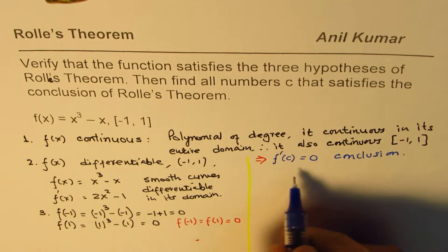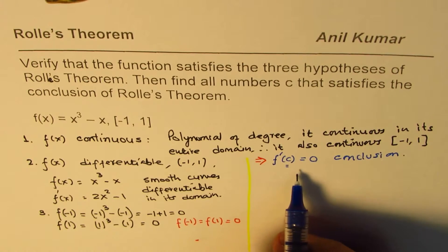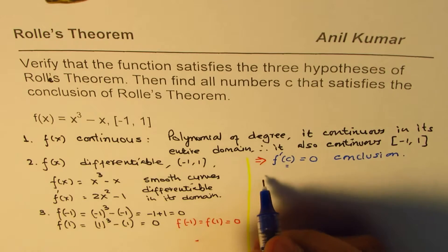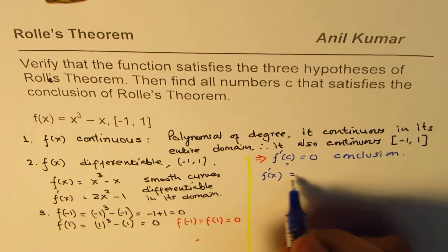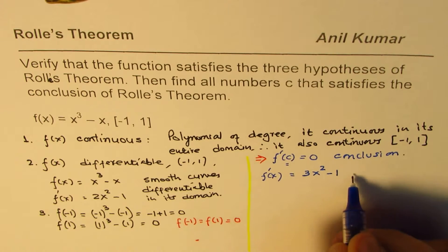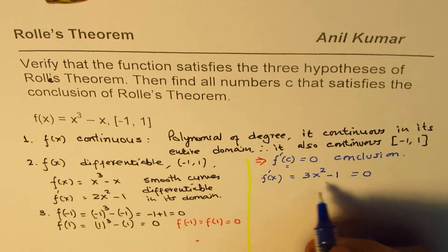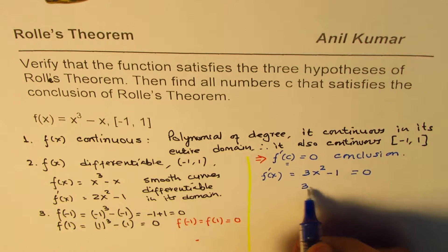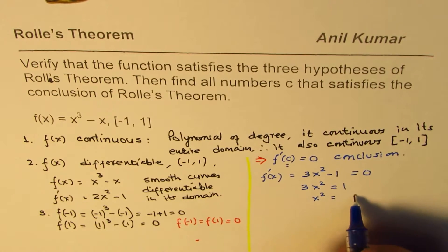So we need to find what that c is. To find c, we know the derivative. We know f'(x) in our case is 3x² - 1. We can equate this to 0 to find those points. Solving this we get 3x² = 1, or x² = 1/3.